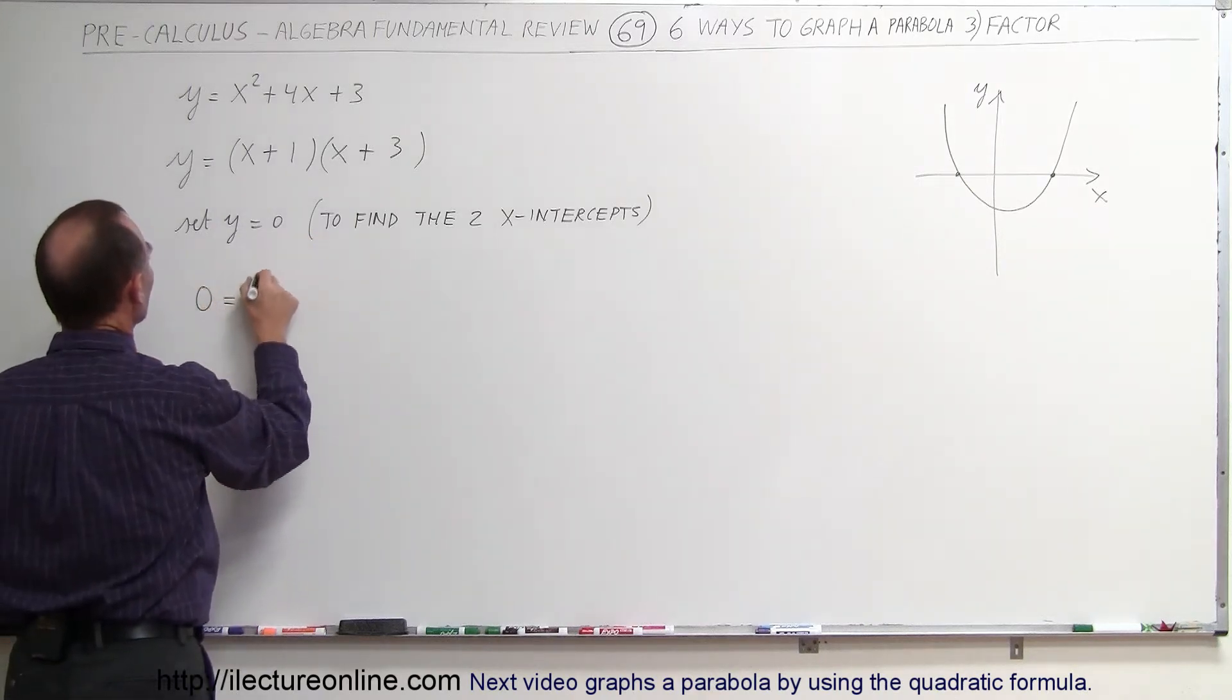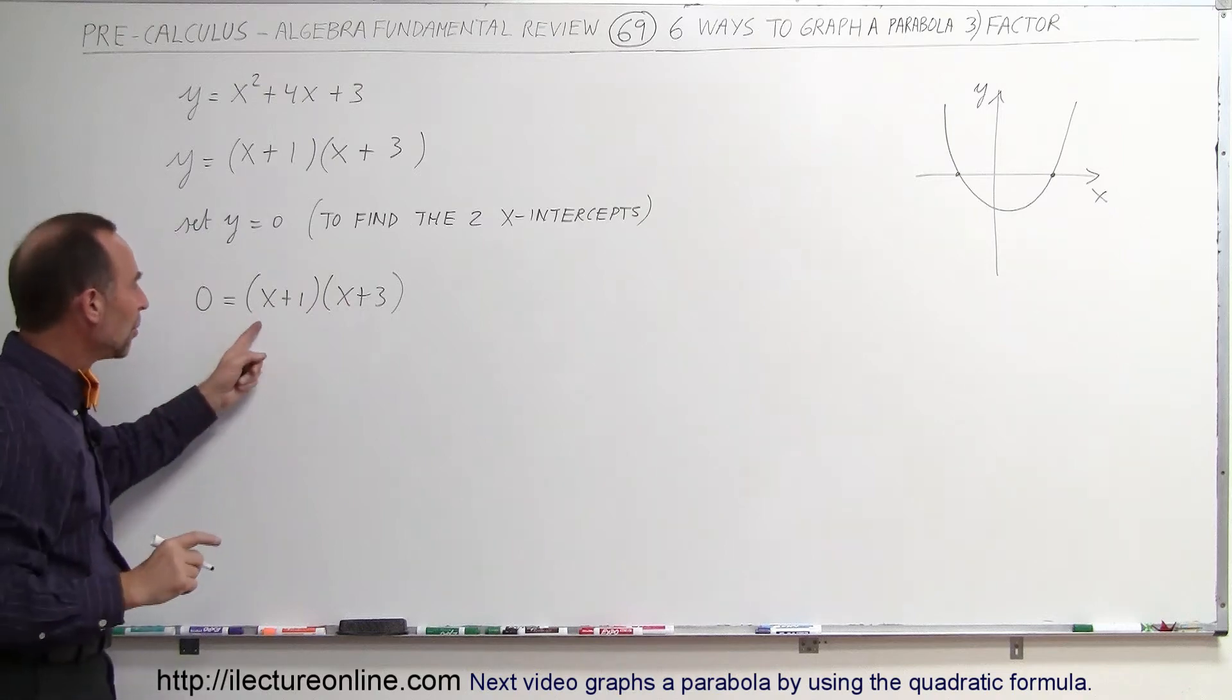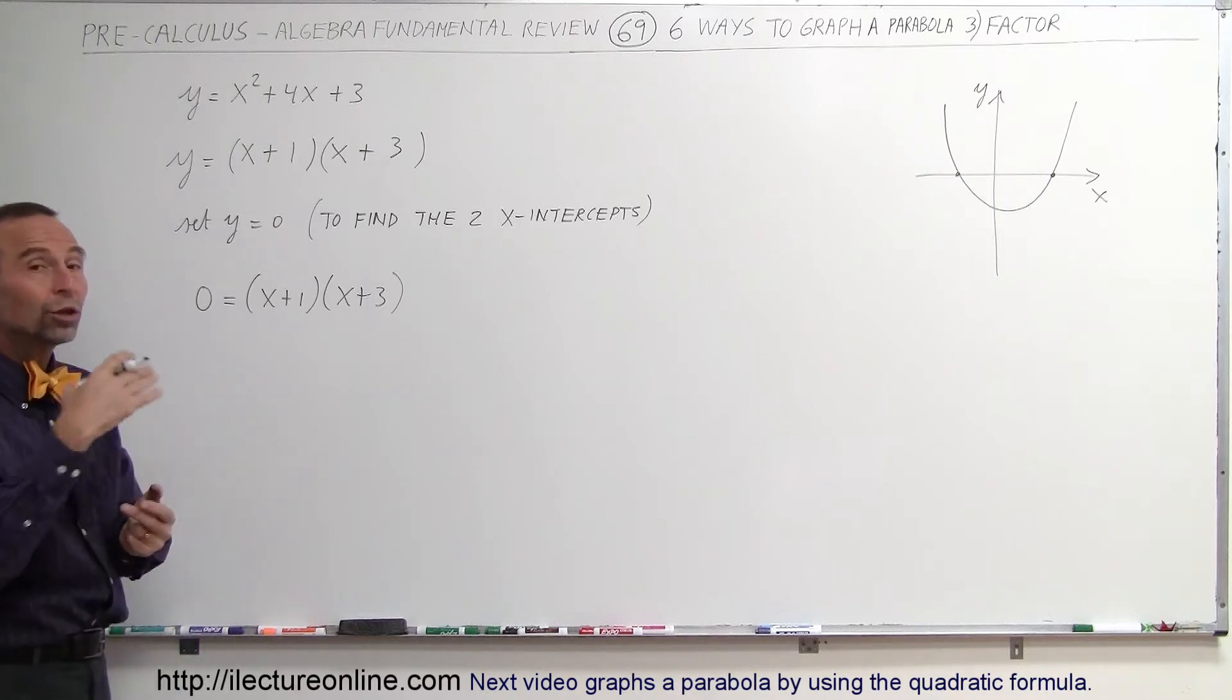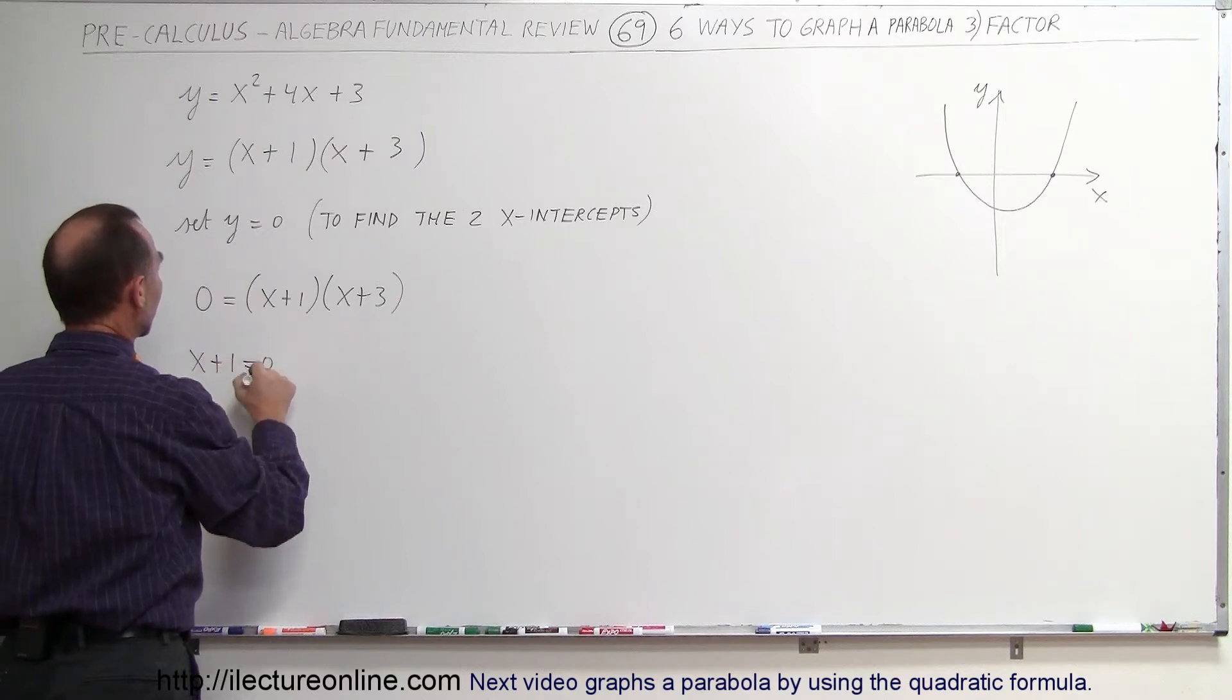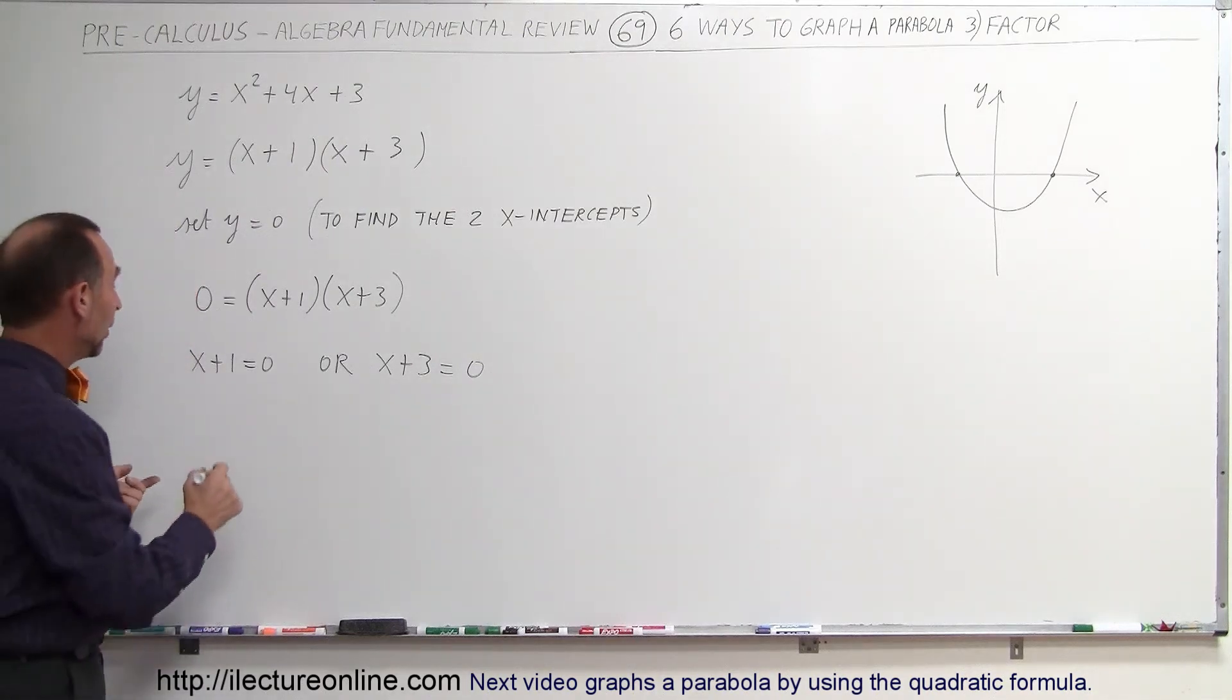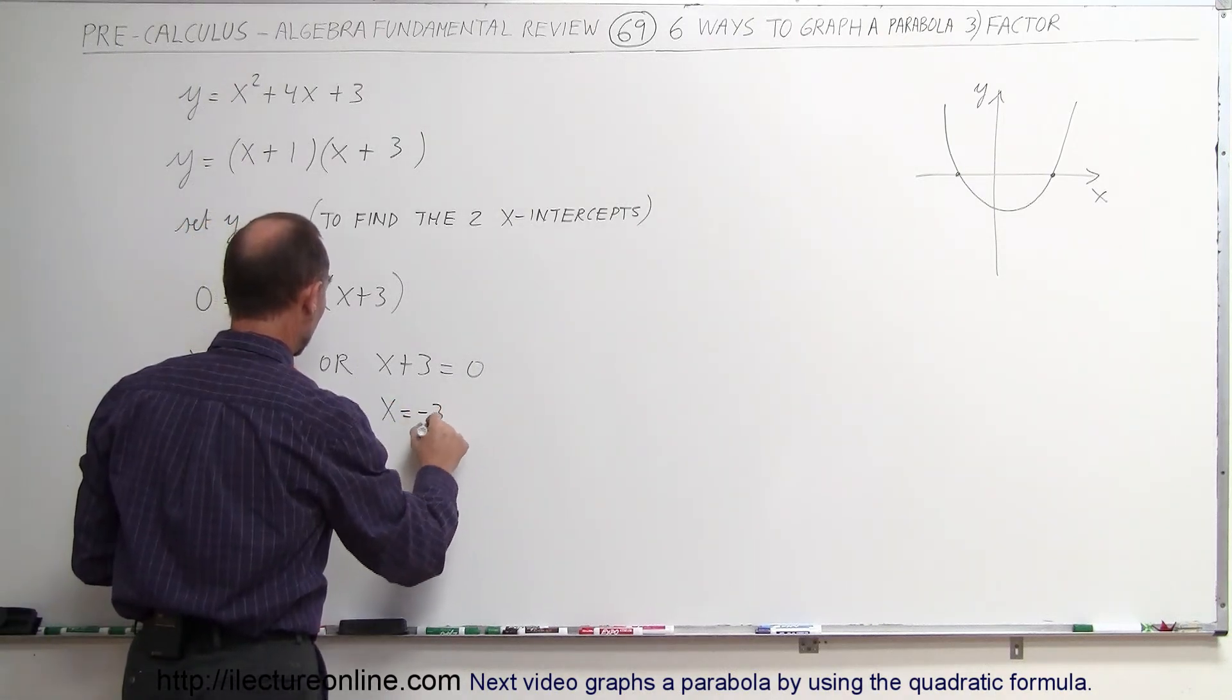So zero equals the quantity x plus one times the quantity x plus three. Now here we have a situation where we multiply two things together and we get zero. Whenever you get zero and you multiply two things together, that means either one or the other is zero, which means that x plus one must equal zero or x plus three must equal zero. In the first case, if x plus one equals zero, that means x equals negative one. In the second case, if x plus three equals zero, that means x is equal to minus three.